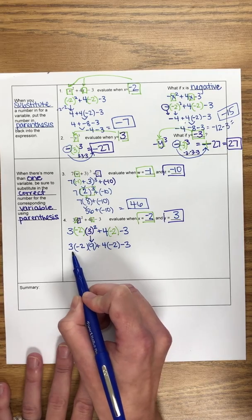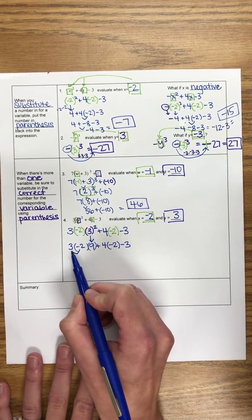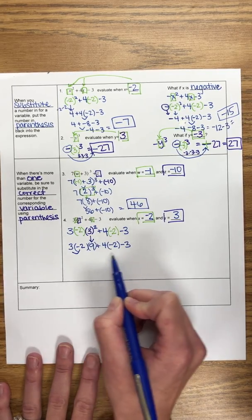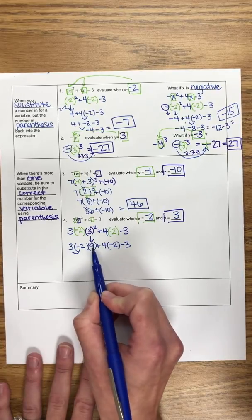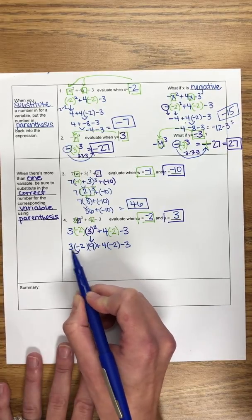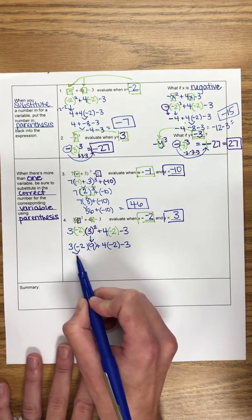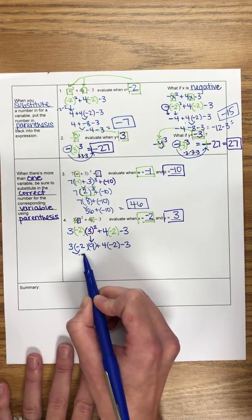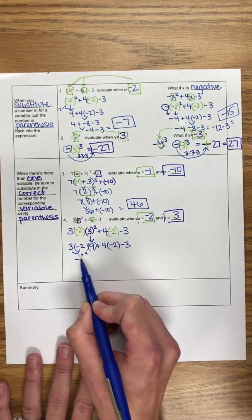And then this is all multiplying, so we're going to do all of that. You can also go step by step if you want to, if that's easier. So this would be 3 times 2 is negative 6, and then you could rewrite it all. But because all three of these are being multiplied, we can do it all at the same time. So that gives me negative 6 times 9 there, which is negative 54.